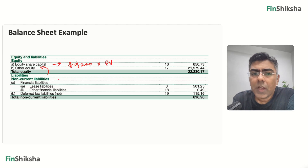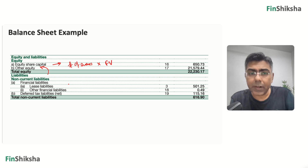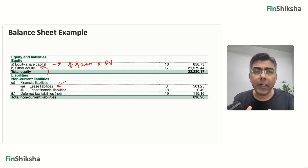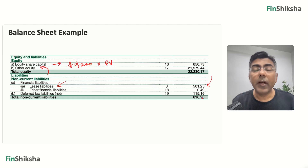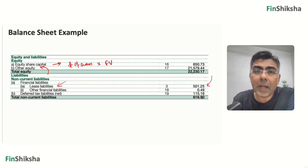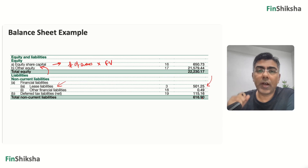Then you have liabilities — financial liabilities. DMART actually doesn't have too much debt; it has some lease liabilities. Remember the discussion about a store on rent — you classify it as if you borrowed money and then bought it. On the asset side we put right of use assets; on the liability side we have lease liabilities. These are notional liabilities. You'll have lease liabilities both in long-term and short-term liabilities. This is the non-current lease liability — a notional debt denoting that you borrowed money to acquire that rental asset as if you had bought it.